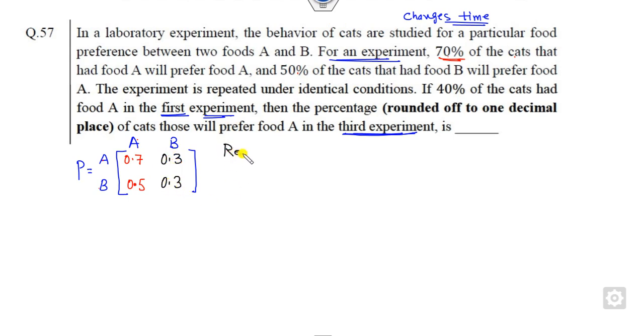Now what is your required probability? You want to find the probability, the percentage means the probability of the cat who prefers food A in the third attempt. This is your target. It means your target is to find the state probability A and B. Whatever the answer is given to you here is the right answer. So how can we solve that?